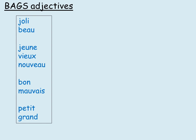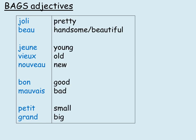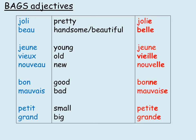The BAGS adjectives are: joli and beau (beauty); jeune, vieux, nouveau (age); bon and mauvais (goodness); petit and grand (size). For feminine agreement: joli adds an E; beau changes completely to belle; jeune stays the same; vieux goes to vieille; nouveau goes to nouvelle; bonne doubles the N and adds an E; mauvais adds an E to become mauvaise; petit and grand just add an E. You might want to make notes on these.